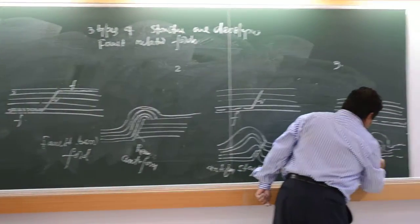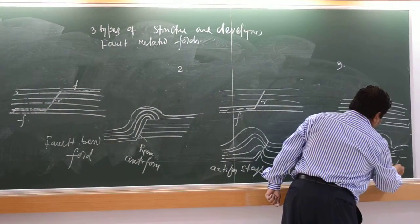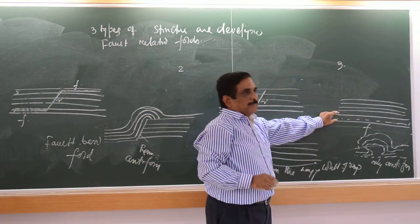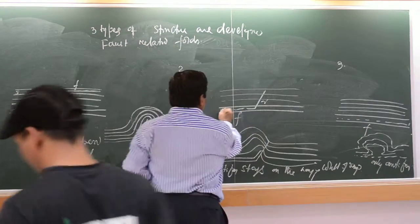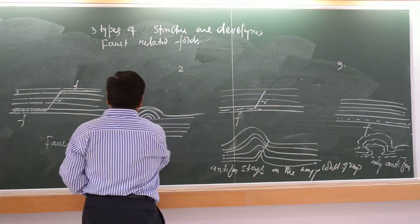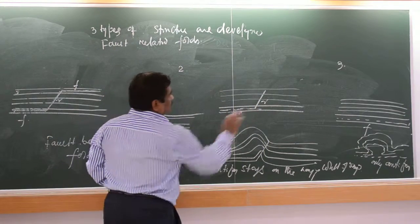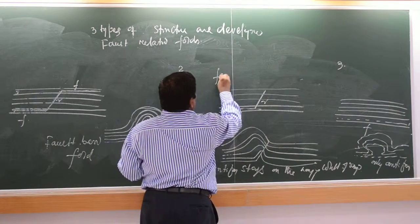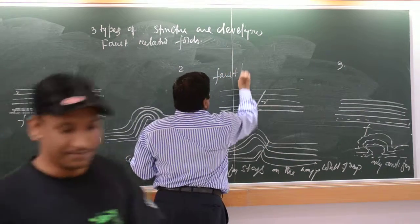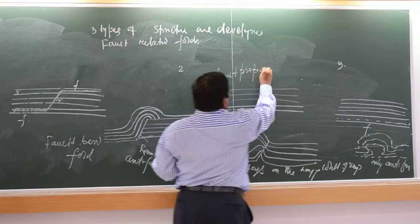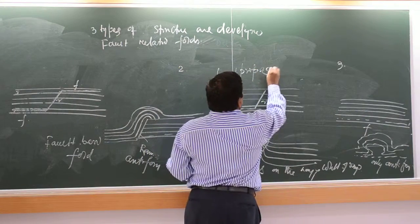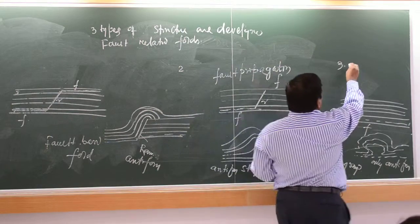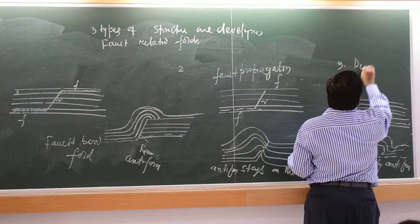This is the only antiform above this decollement surface. Above this decollement, this is the decollement. So this structure is called a fault propagation fold. Fault propagation. This is the detachment fold, called detachment fold.